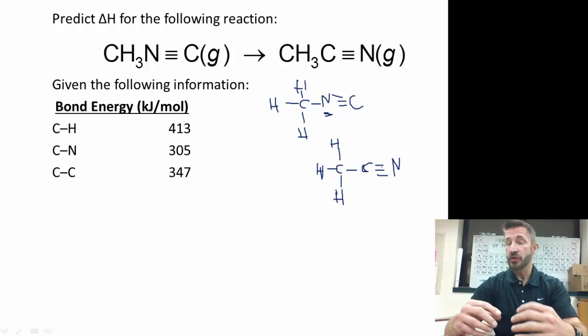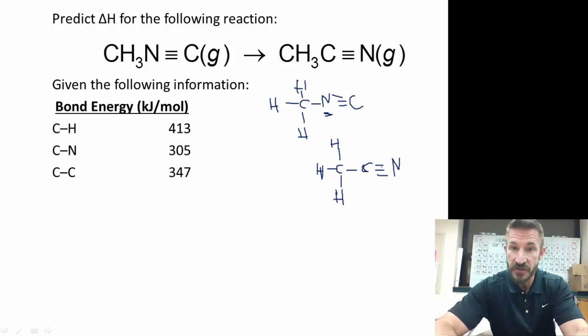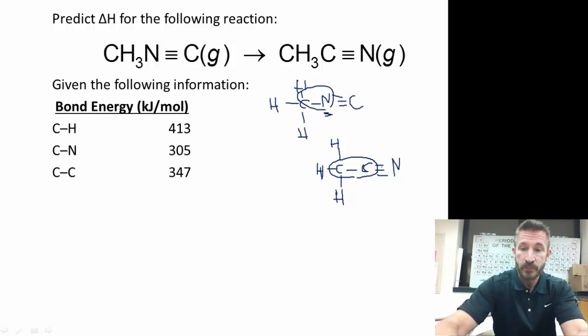The thing to note here is if you can do bonds broken minus bonds formed, notice there are actually four different bonds that don't break. You don't ever break any of the carbon-hydrogen bonds. You don't ever break the carbon-nitrogen bond. The only bond that you break is a bond between this carbon and this nitrogen. And this bond that is formed is a bond between the carbon and the carbon. So when you look at this table, actually there's one more value not in this table. Well, the only two values we need to use are these right here.